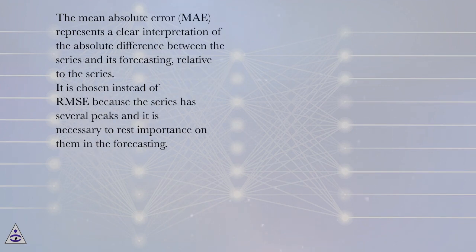The Mean Absolute Error, MAE, represents a clear interpretation of the absolute difference between the series and its forecasting relative to the series.